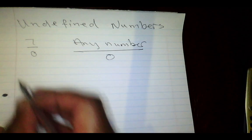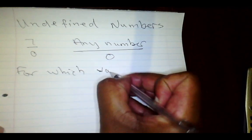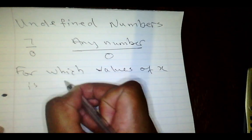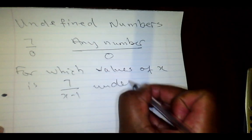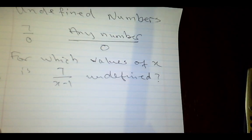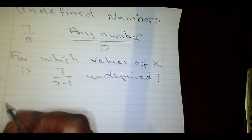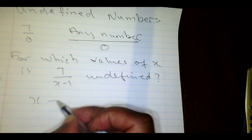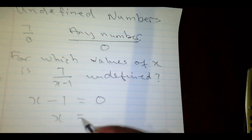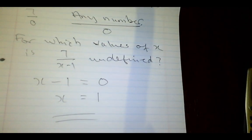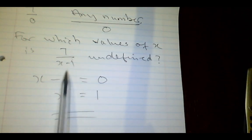Let's apply that: for which values of x is the expression 7 over (x minus 1) undefined? We said if the denominator is zero, the expression is undefined. So this is undefined if x minus 1 equals zero, which means x equals 1. The approach is: take your denominator, set it equal to zero, and solve for x. That value of x cannot be substituted into the expression, because it would make the denominator zero and the expression undefined.